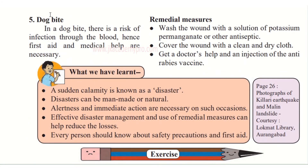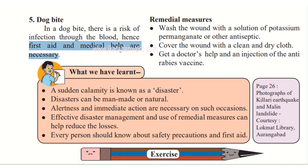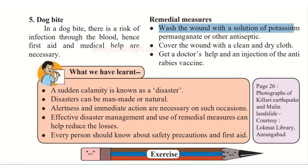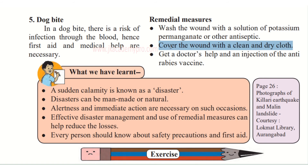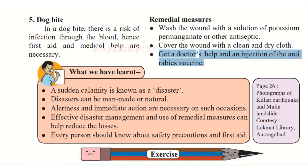Now, what happens if you have experienced a dog bite? In a dog bite there is a risk of infection through the blood, so first aid and medical help are necessary. Wash the wound with a solution of potassium permanganate or another antiseptic. Cover the wound with a clean and dry cloth. Get doctor's help and an injection of anti-rabies vaccine immediately — take that person to the doctor right away.